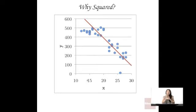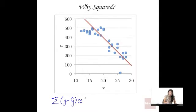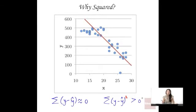Remember we talked about what it means to be in the middle? It means that the distances on the positive side — the points above the line — and the points below the line, the negative distances, should all balance out. So if you have a bunch of positive and a bunch of negative and you add them together, you should get zero. So the sum of the residuals — Y minus Y-hat — should be roughly equal to zero for the best fitting line. Because of that, we want to square these distances so that the sum of squared errors is greater than zero. Squaring also gives us other mathematical properties we'll be able to use in the future.